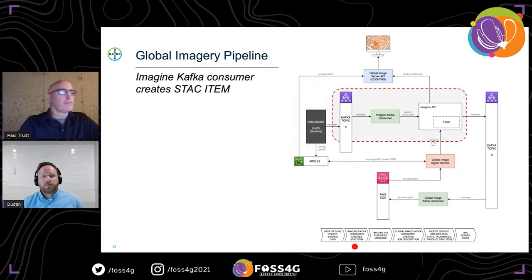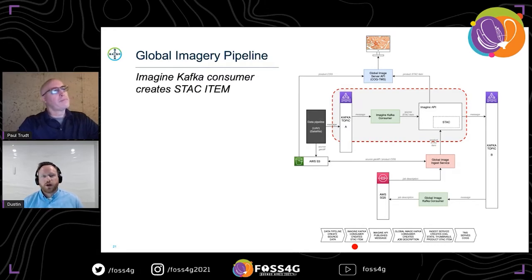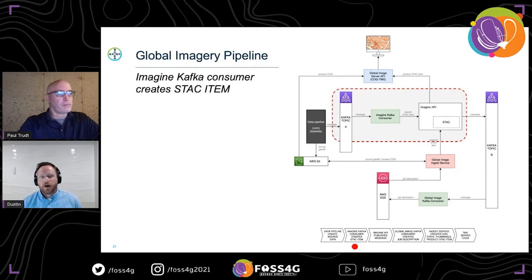The second stage is a service listening for new messages being produced by these existing data pipelines. For each message the service receives, it will create a STAC item and send that item to the ImagineAPI so it can be added to one of the STAC collections. For this project we ended up creating three custom STAC extensions needed by various parts of the pipeline to help with image processing, image rendering, and searchability. I'll talk about each of those three extensions as they come up within the pipeline.